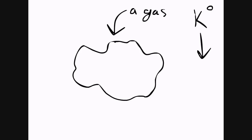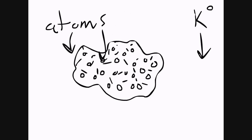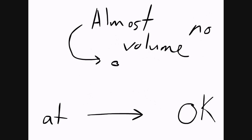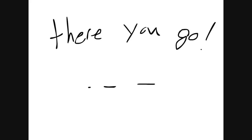As a gas is cooled, the atoms inside stop moving as fast. And as temperature drops, they move closer and closer together. At absolute zero, the gas barely has any volume at all.